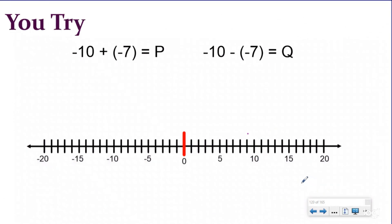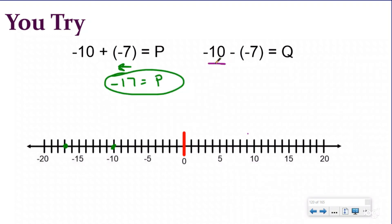Here's our You Try problem — go ahead and pause it, show your work, then push play to check your understanding. For the first problem, we're starting at negative ten and adding a negative, which means we move to the left seven places, ending up at negative seventeen. So p equals negative seventeen. For the second problem, we're starting at negative ten, but we are subtracting, so we rewrite this as adding the opposite. The opposite of negative seven is positive seven.